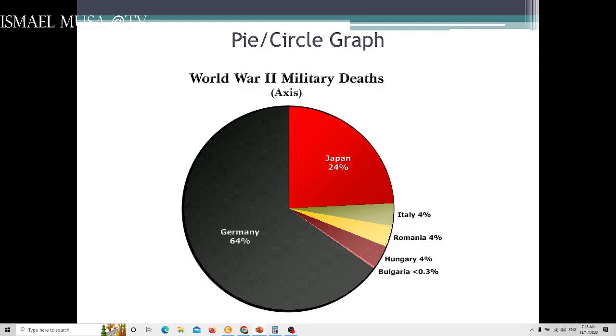This is pie chart or pie graph. World War II military deaths. This is just for the purpose of an example. We want to see, at once you will determine that the deaths in Germany is higher than other countries participating in World War II. Germany, 64% of the deaths accrued to, and Japan 24%. Immediately you can see which one is the highest and which one is the lowest. Bulgaria, that's 0.3%.